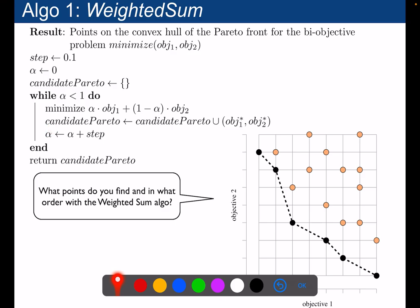We then slightly increase alpha. At the first iteration, alpha is equal to zero, meaning all the focus is put on objective 2 and we minimize objective 2 — finding this point first. Then we gradually increase alpha a little bit, giving some weight to objective 1 as well, and we find the next point and add it to the Pareto set. We continue finding point after point, and at the end this is the Pareto set that we have found.